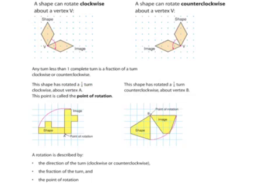Looking at this shape here, we're going to pick a line — I'm going to pick this line and that same line on my image — and I'm going to draw my circle. I can see that this is about a quarter of an entire circle. So this would be a quarter turn, and it's moving counterclockwise, so a quarter turn counterclockwise around point A. Point A is our rotation point.